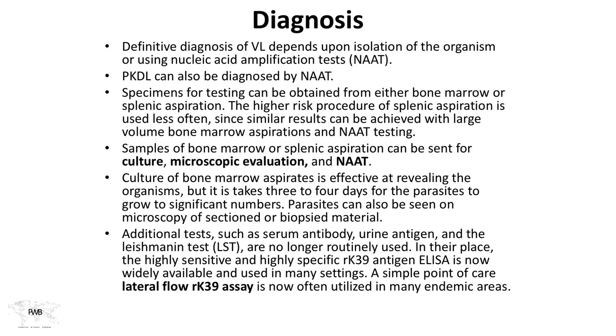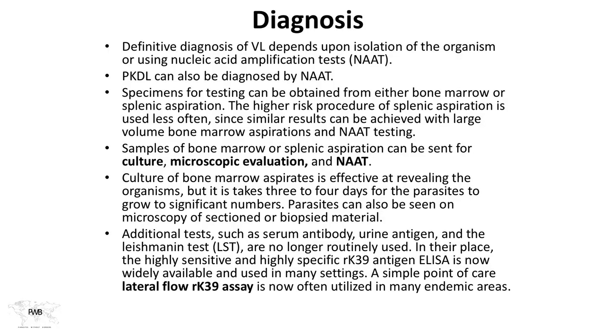What about diagnosis? The definitive diagnosis of visceral leishmaniasis depends upon isolation of the organism or using nucleic acid amplification tests. The diffuse cutaneous form can also be diagnosed by nucleic acid amplification testing. Specimens have historically come from bone marrow or splenic aspiration — but splenic aspiration is not without risk, and the frequency of complications is higher than originally thought. Many now suggest doing repeated large-volume bone marrow aspirations and avoiding the risks of splenic aspiration when possible. Once you have samples, they can be sent for culture, microscopic evaluation, and nucleic acid amplification testing.